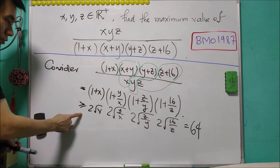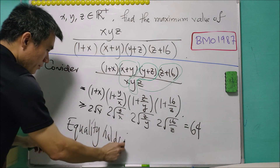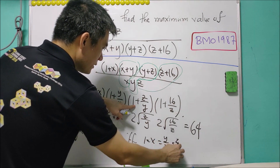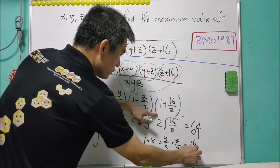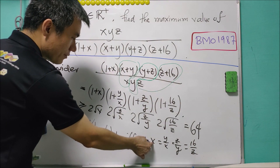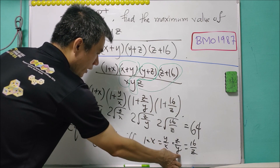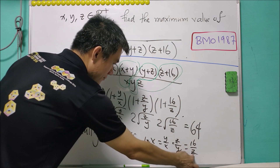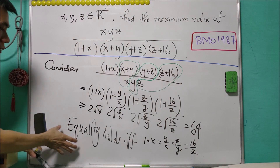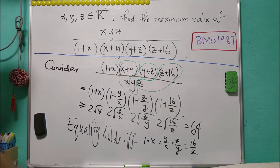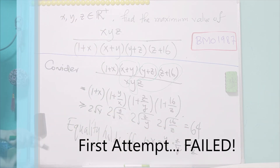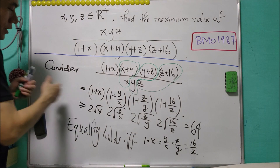But wait — we need to check whether the equality holds. Equality holds if and only if 1 = X, 1 = Y/X, 1 = Z/Y, and 1 = 16/Z. This gives X = 1, Y = 1, Z = 1, but then 1 = 16, which is a contradiction. So the equality never holds, meaning this expression is strictly greater than 64. Unfortunately, 64 is not the minimum value.